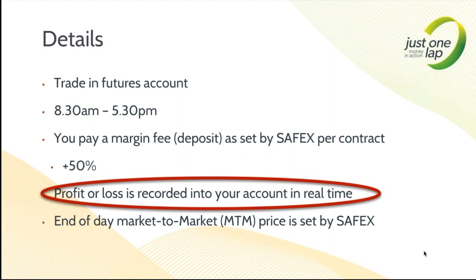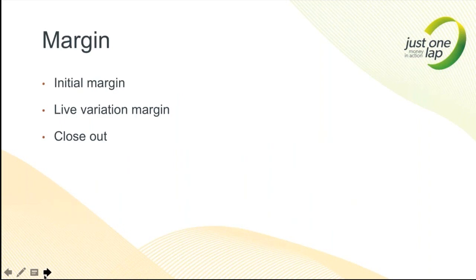Your profit or loss is recorded in real time — during the course of the day, as the market moves, money is being credited or debited from your account. If your account goes into the red and swallows up that extra 50% buffer, you are in auto closeout and they will want more money or start exiting positions to get your account back into the positive. You will get emails and SMS messages saying things are not looking good — please deposit money or close positions. End of day mark-to-market is just a theoretical price; we don't stress it.